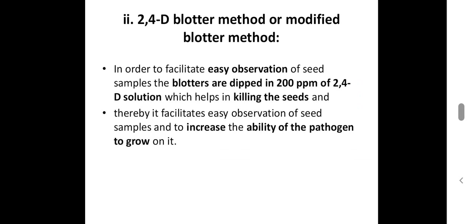Second is the 2-4-D blotter method, also called the modified blotter method. For easy observation of seed samples, the blotters are dipped in 2-4-D solution having a concentration of 200 ppm. Due to this, seeds get killed and the pathogen can easily attack and grow on them.